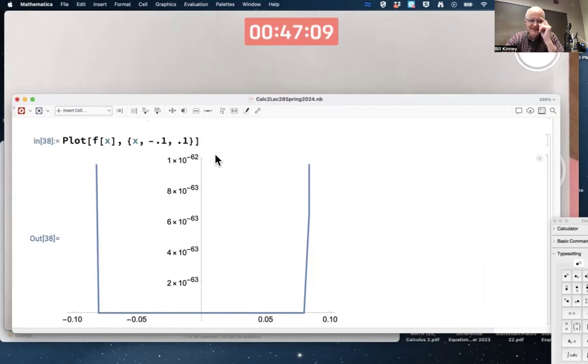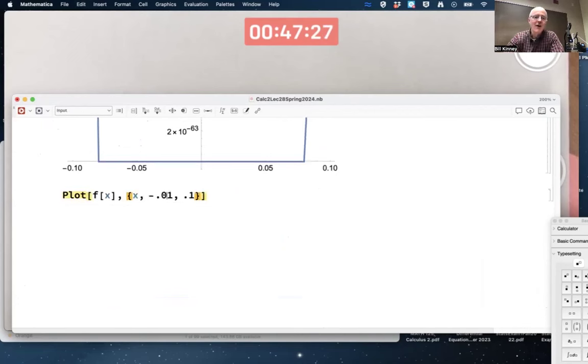Look at the vertical axis: 10 to the negative 63. What is this? Are there corners in the graph? Is it not differentiable there? That's deceiving. It actually is differentiable. Try one more.